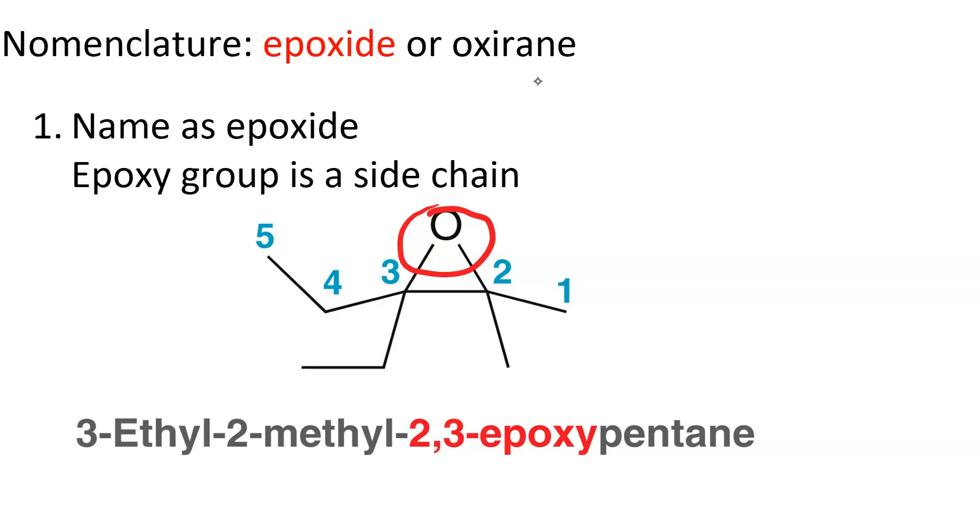And then we have a methyl group and an ethyl group. And so the parent becomes 2,3-epoxypentane because that 2,3-epoxy part, that three-membered ring, the oxygen is bonded to carbons 2 and 3 of the ring.